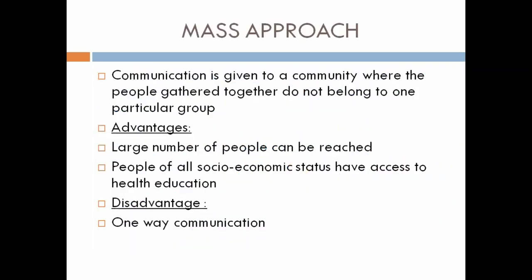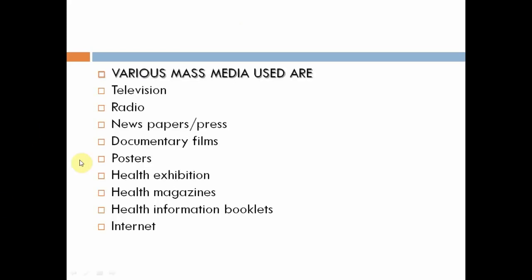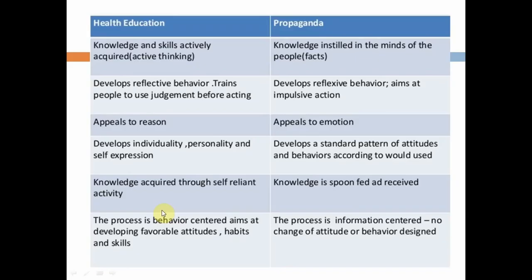The mass approach involves communication that reaches millions of people. The advantage is that large numbers across all socioeconomic statuses can be reached. However, the disadvantage is that it is always one-way communication, just like a message going viral on social media. Various media used include television, radio, newspapers, posters, magazines, and the internet.